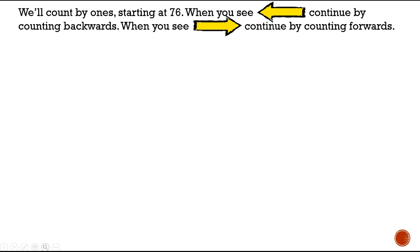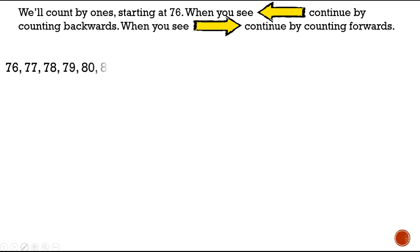We are going to count by ones starting at 76. When you see this arrow, you're going to continue counting backwards, and when you see this arrow, you're going to continue counting forwards. So let's start at 76: 76, 77, 78, 79, 80, 81.